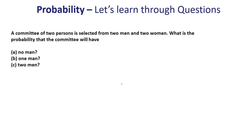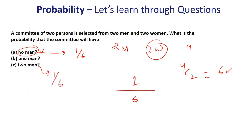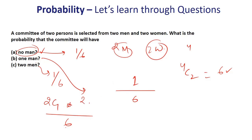A committee of two persons is selected from two men and two women. Total ways to form a committee of two from four people is 4C2, which is 6. Probability of no man: must pick both women, only one way, so 1/6. Probability of two men is similarly 1/6. Probability of one man: 2C1 men and 2C1 women, which is 2×2 upon 6, giving 4/6 or 2/3.